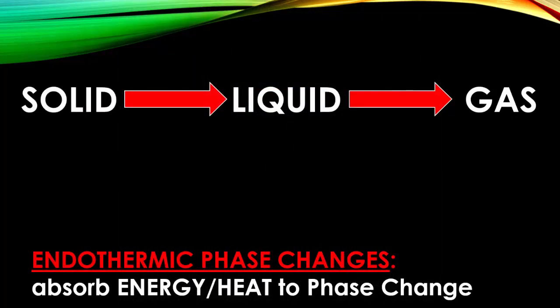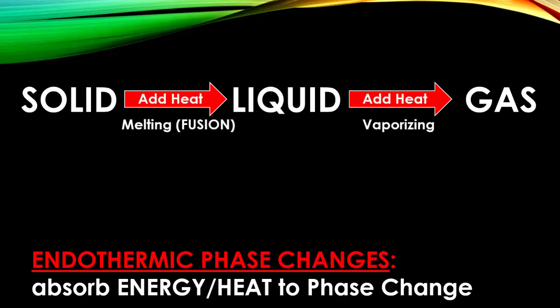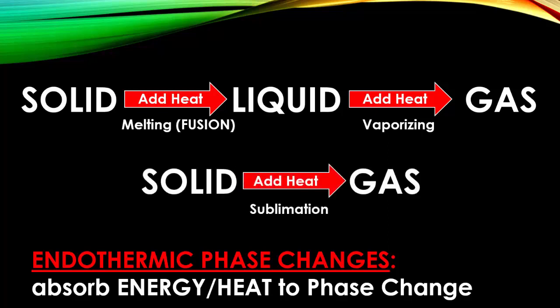When a solid becomes a liquid and then that liquid becomes a gas, we call that an endothermic phase change, because energy must be absorbed for the phase change to occur. To go between the different phases, heat must be added. When a solid goes to a liquid, we call that fusion, otherwise known as melting. And when a liquid goes to a gas, we call that vaporizing. Also solids to gases is called sublimation. These are all examples of endothermic phase changes.